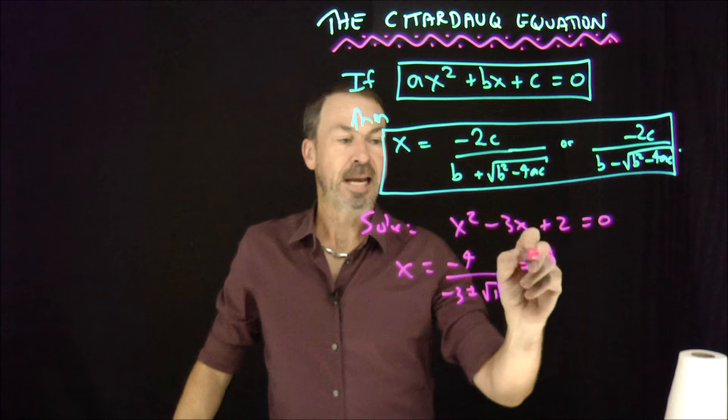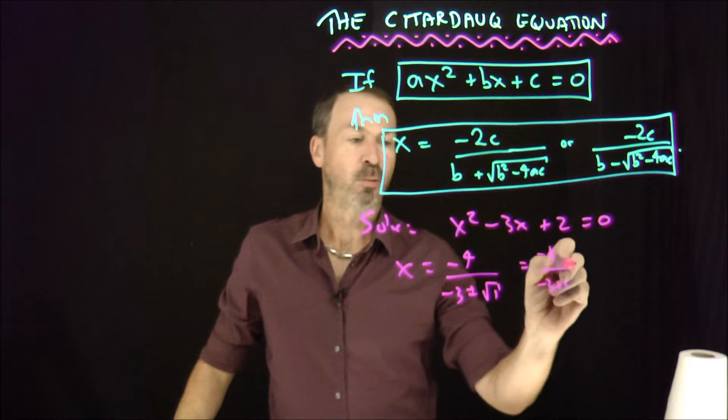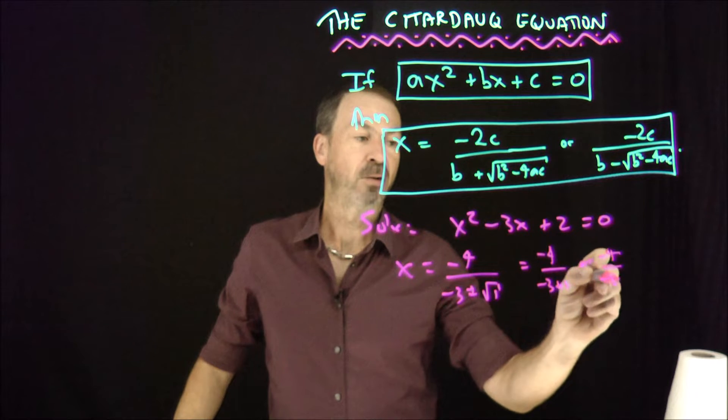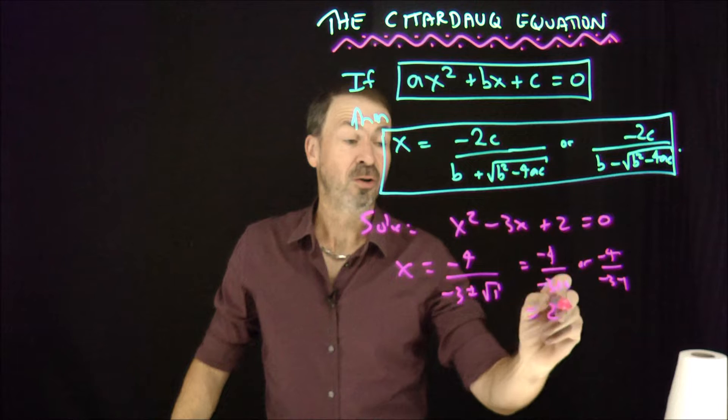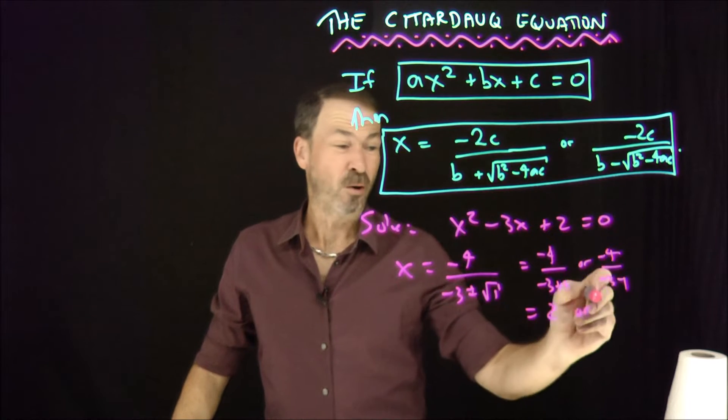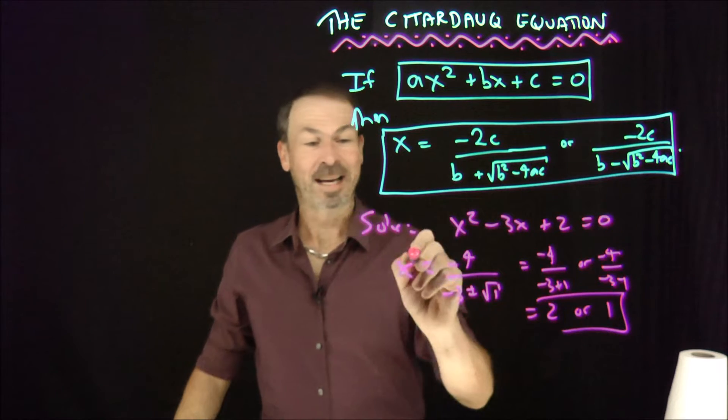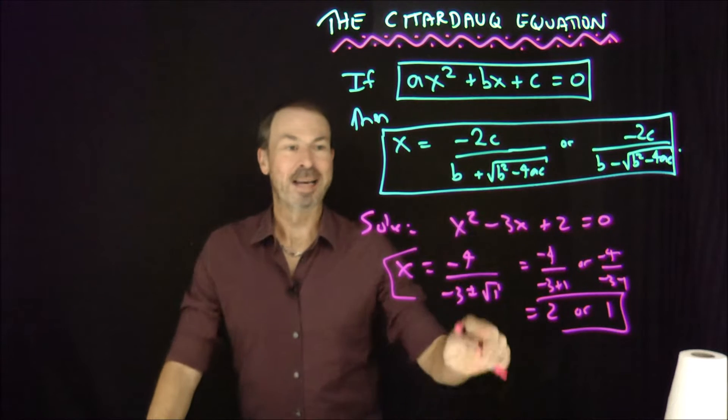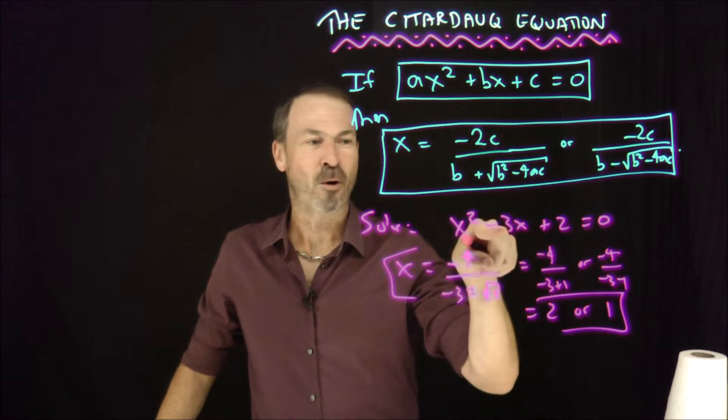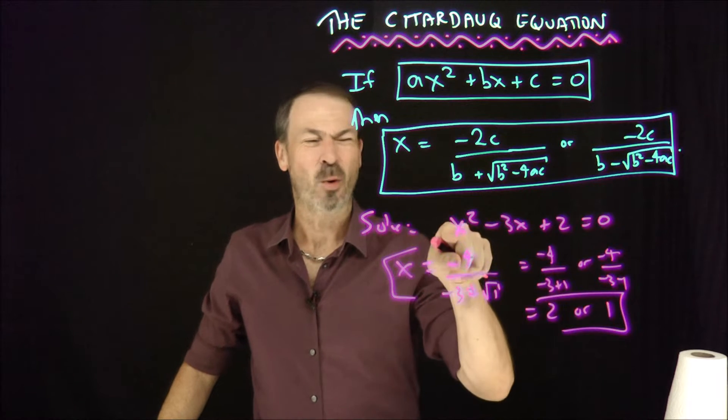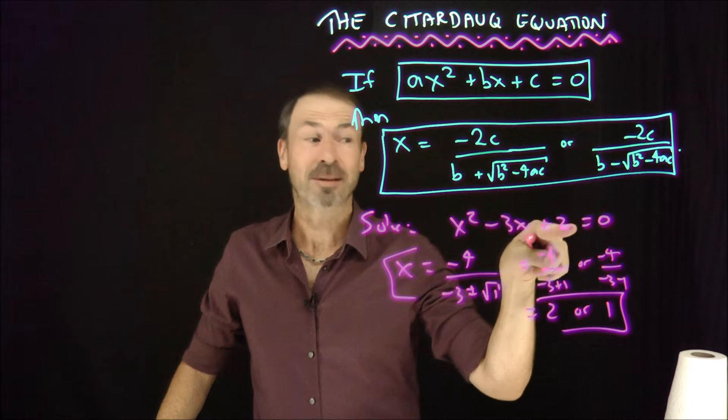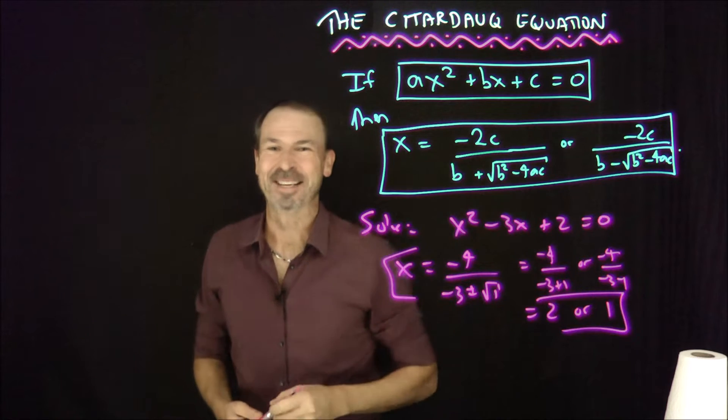So it's either -4 / (-3 + 1), or -4 / (-3 - 1). That's -4 / -2, so it's either 2, or -4 / -4 which is 1. So apparently x is either 2 or 1, and you can check that's correct. 2² = 4, minus 6 plus 2 is zero. And 1² minus 3 plus 2 is zero. Yes, 1 is indeed a solution.